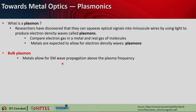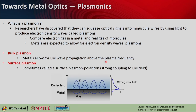Bulk plasmons exist in the bulk metal; metals allow electromagnetic wave propagation above the plasma frequency. There are also surface plasmons, also known as surface plasmon polaritons, which show very strong coupling to the electromagnetic field. We have seen briefly in the introduction lectures that you can have a metal-dielectric interface with surface waves propagating along this interface, and the field extends more into the dielectric compared to the metallic region.